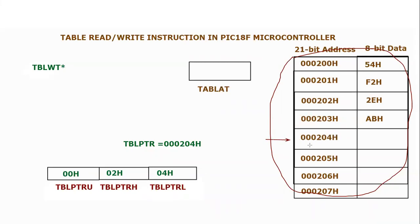This specific location is 000204 hex. That means the table pointer is pointing to that location, and if we are going to perform any table read/write instruction, we will be utilizing this specific location.